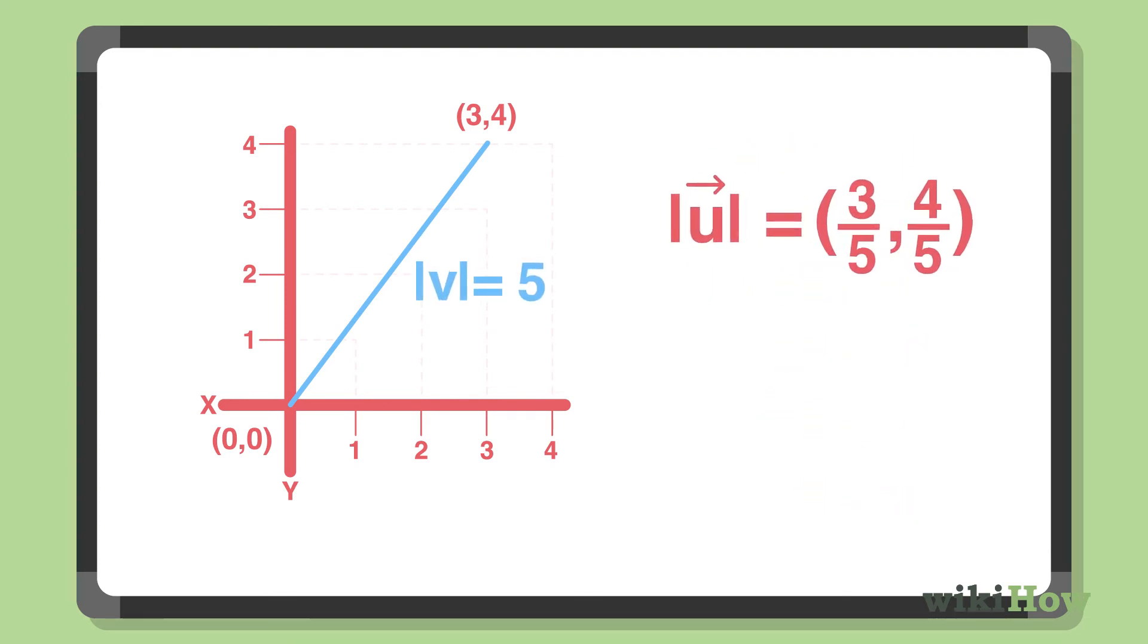Finally, divide the x and y coordinates by the length of the vector to get the endpoint coordinates of your normalized vector. Now you know that the start point of your unit vector is (0,0), its endpoint is (3/5, 4/5), its magnitude is 1, and it moves up as you go from left to right along the x-axis.